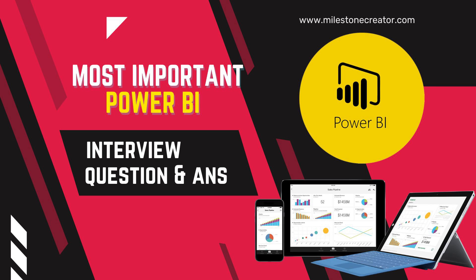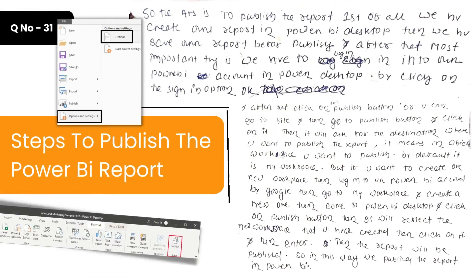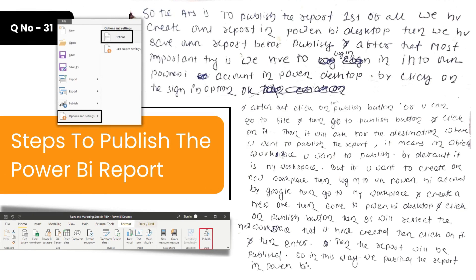The first question is: can you please explain the steps you usually follow to publish a Power BI report? To publish a report, first we have to create our report in Power BI Desktop, then save it before publishing. After that, we have to log into our Power BI account in Power BI Desktop by clicking on the Sign In option, then click on the Publish button.